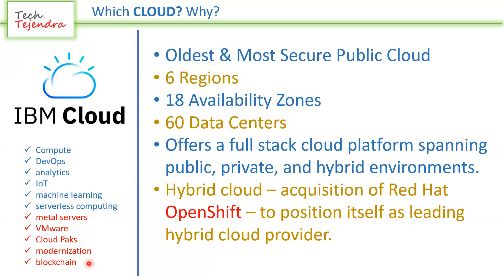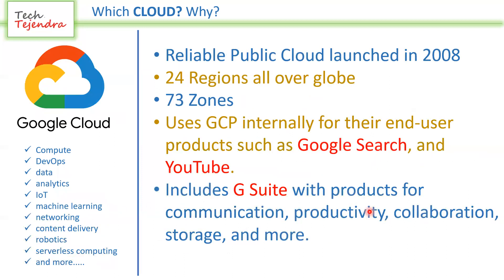IBM Cloud's specific and differentiated services include bare metal servers, VMware Cloud Packs, modernization, and blockchain. With bare metal servers, IBM provides a physical server and the client installs the hypervisor or virtualization layer of their choice. The Cloud Packs concept — built on top of Red Hat OpenShift — is unique and represents the near future of cloud for modernizing applications.